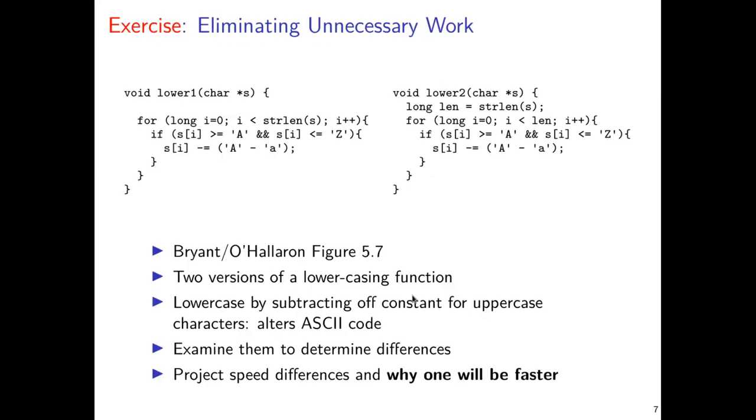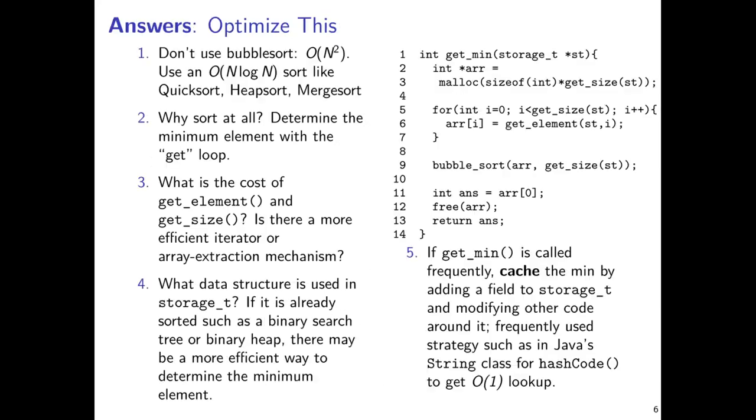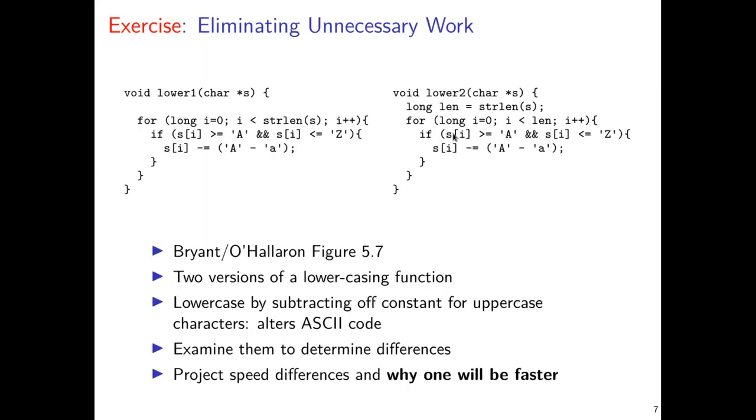I mentioned a moment ago this idea of eliminating unneeded work. If you go to a scan of the data structure, there's no need to allocate an array that could hold all the elements in it and sort it. The scan itself is sufficient. This comes up in all kinds of surprising places. Bryant and O'Halloran have a particular exercise which is associated with this. The two functions up here are sample implementations of a lower function, which will modify a string so that all of its characters are lowercase. These are ASCII ranges.